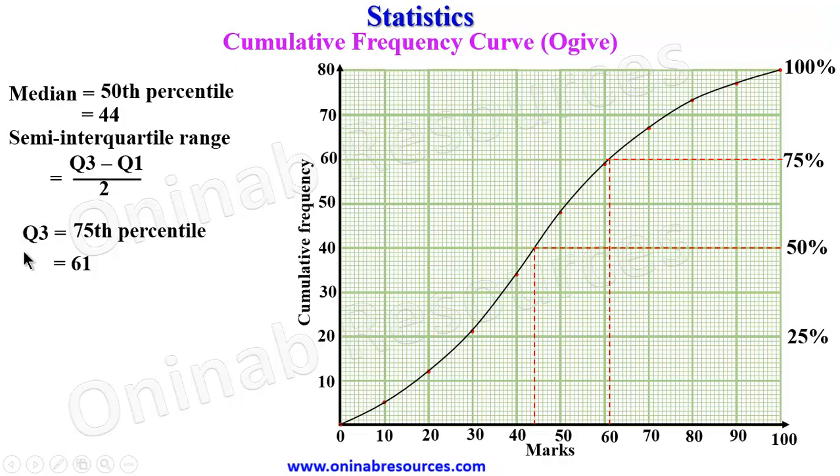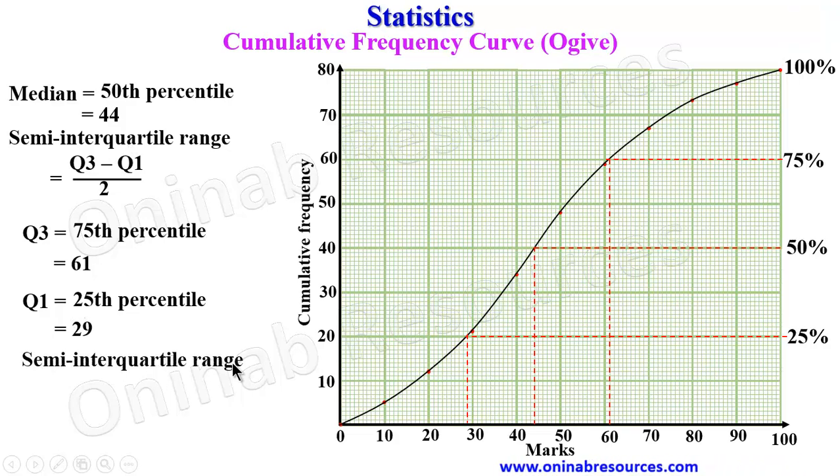Then for Q1, which is known as the lower quartile, is 25th percentile. 25th percentile is obtained from the percentile axis, go to the 25th percentile line, trace it to the curve, and then down to the marks. This is giving us a line away from 30, which gives 29. So the lower quartile is 29. We then go ahead to substitute into our semi-interquartile range.